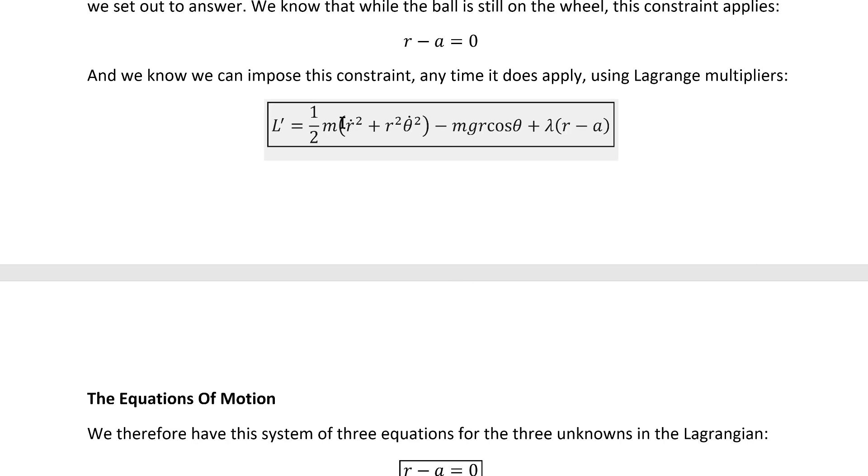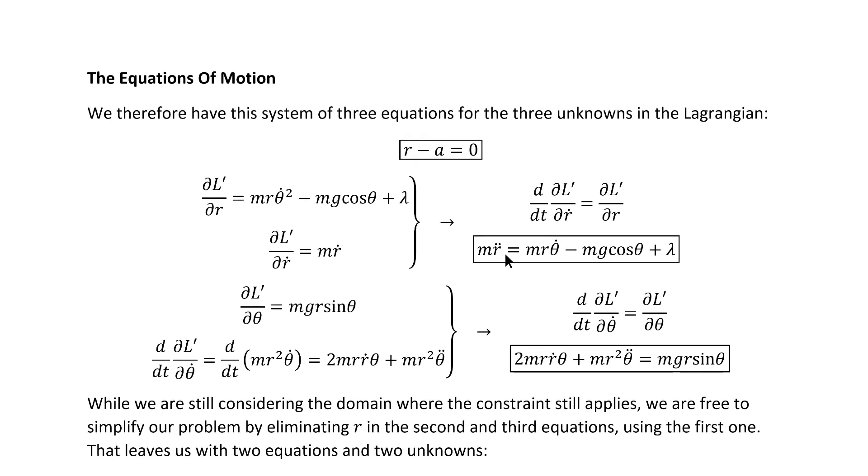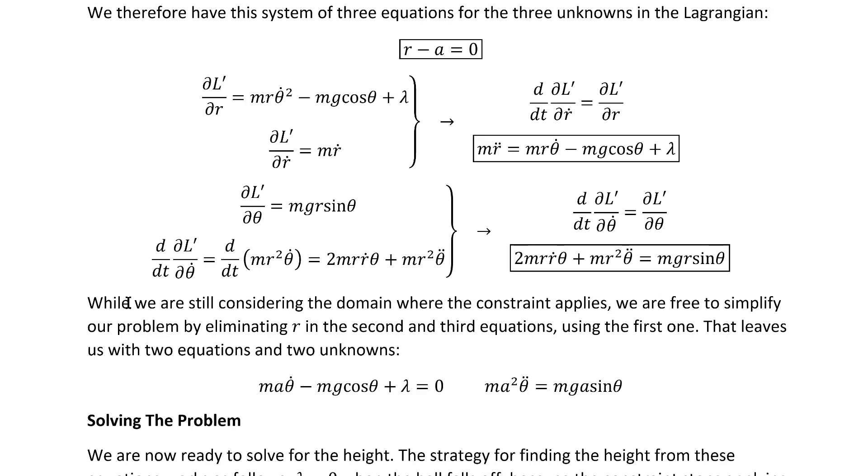We can then calculate the equations of motion from this Lagrangian instead of the original one. If we combine that with the constraint equation, we're left with a system of three equations for three unknowns. The two degrees of freedom that we're used to, theta and r, and then also this lambda quantity. While we're still considering the domain where the constraint applies, we're free to simplify our problem by eliminating r in the second and third equations using the first one. This leaves us with these two equations.